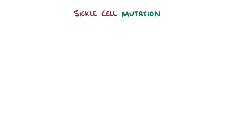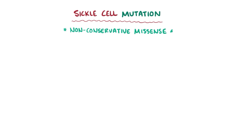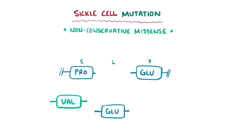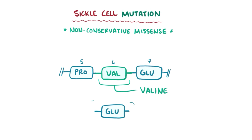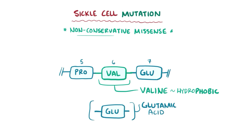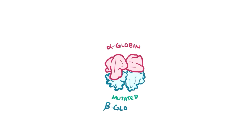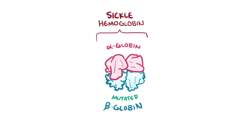Almost always, the sickle cell mutation is a non-conservative missense mutation that results in the sixth amino acid of beta-globin being a valine instead of glutamic acid. A non-conservative substitution means that the new amino acid, valine, which is hydrophobic, has different properties than the one it replaced, glutamic acid, which is hydrophilic. A hemoglobin tetramer with two alpha-globin and two mutated beta-globin proteins is called sickle hemoglobin, or HbS.